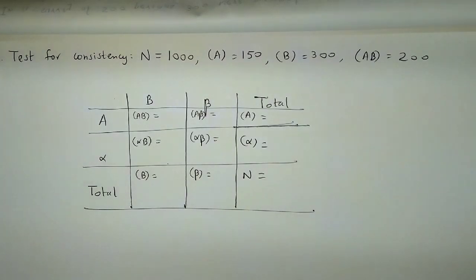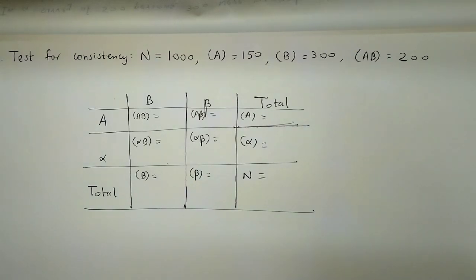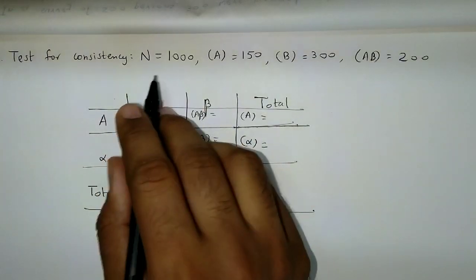Hello, we will take up an example to test the consistency of data. Here you have to check the consistency of data. Remember, when we say consistent data — when any class frequency is negative, the data must not contain any negative class frequency. Also, any class frequency must not be greater than the total population, meaning each class frequency must be less than or equal to n. So let's start with this example.